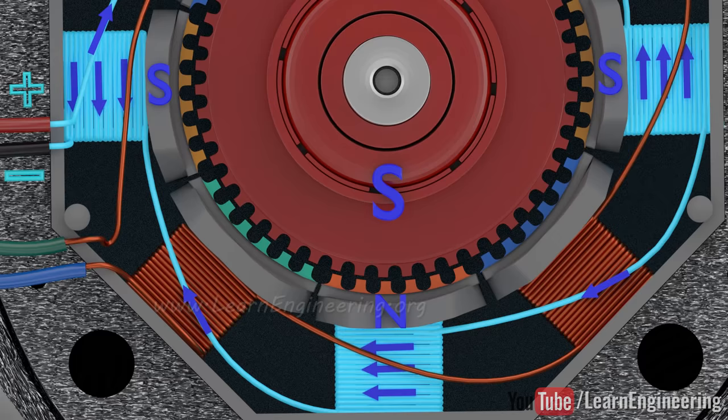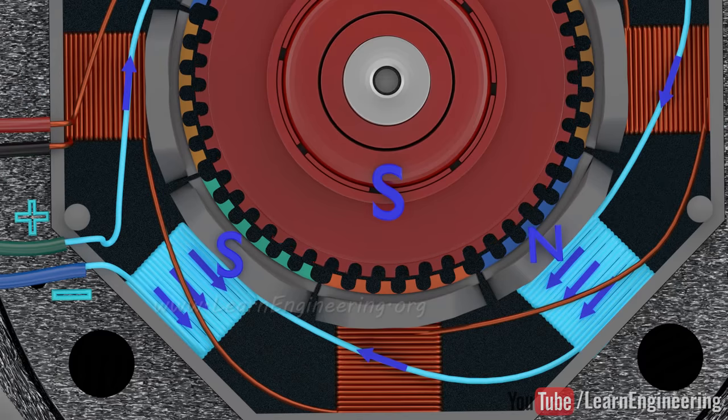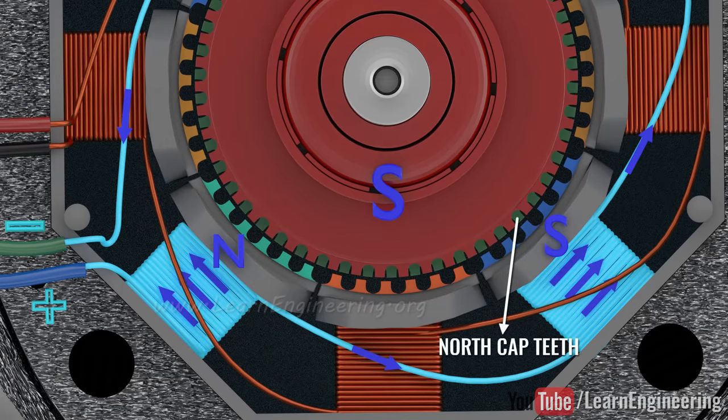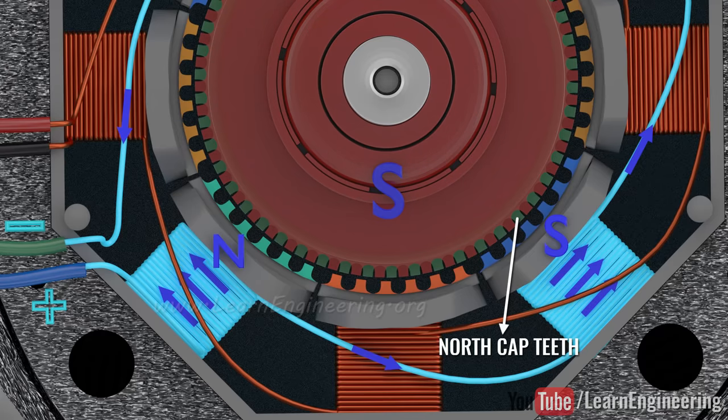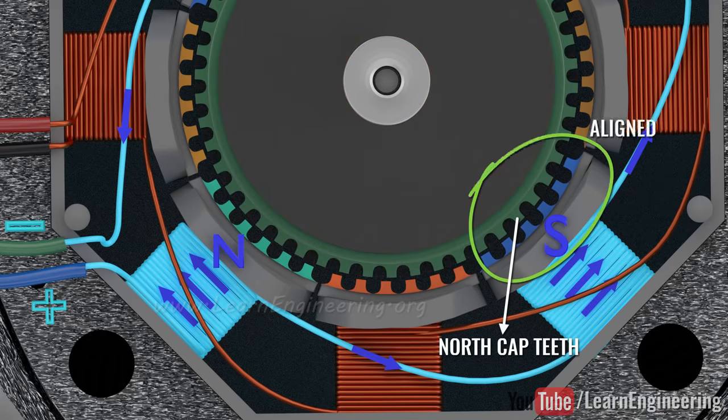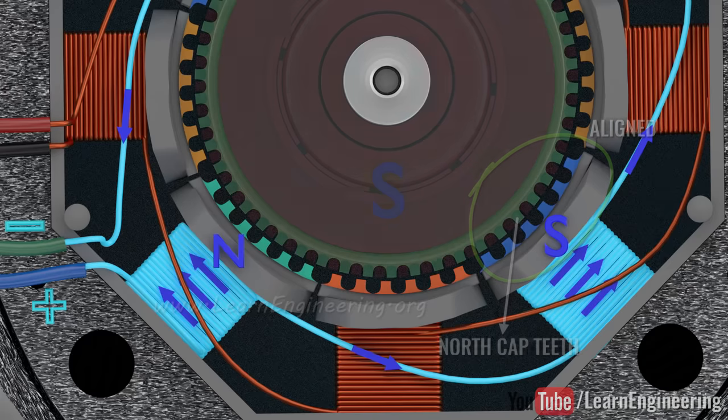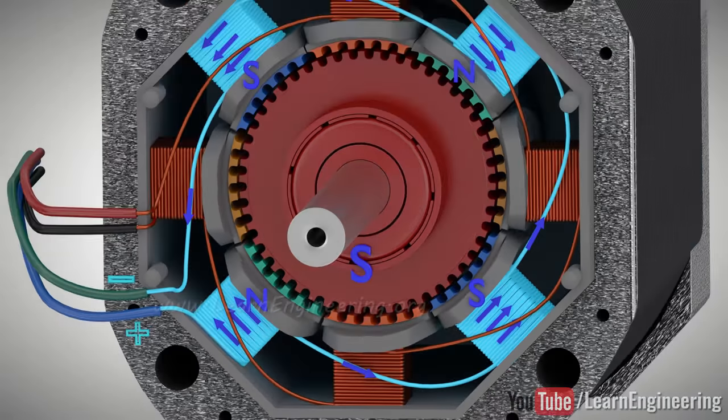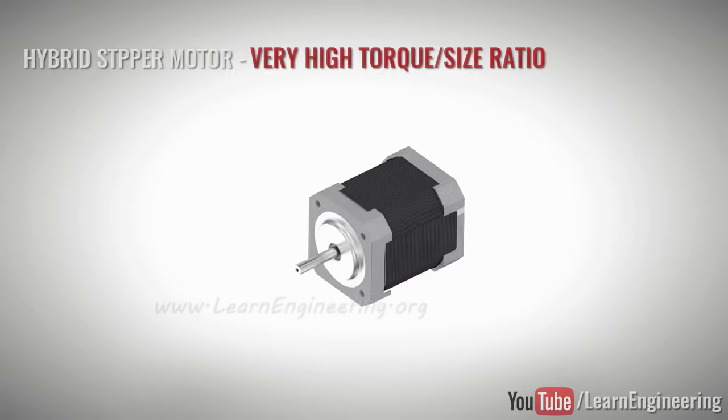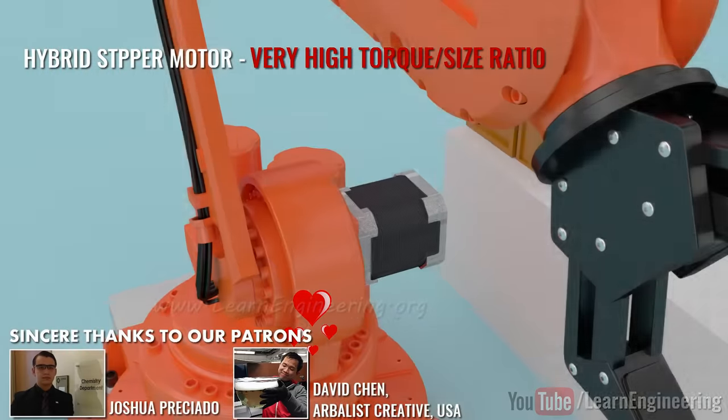It is interesting to note that the north end cap teeth are placed in between the south end teeth. This way, the alignment of the opposite polarity poles are guaranteed. So, this is how a hybrid stepper motor works. They are ideal for applications where precise movements and simple control are desired.